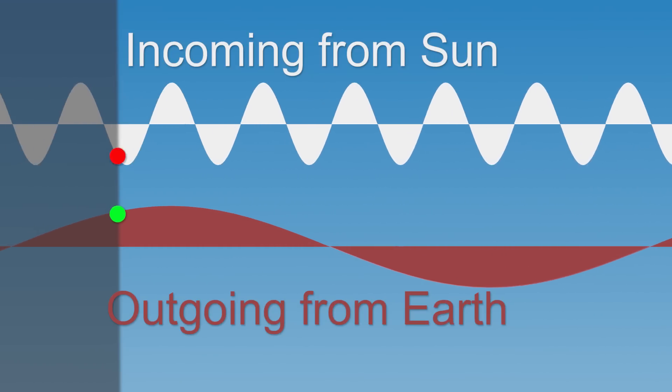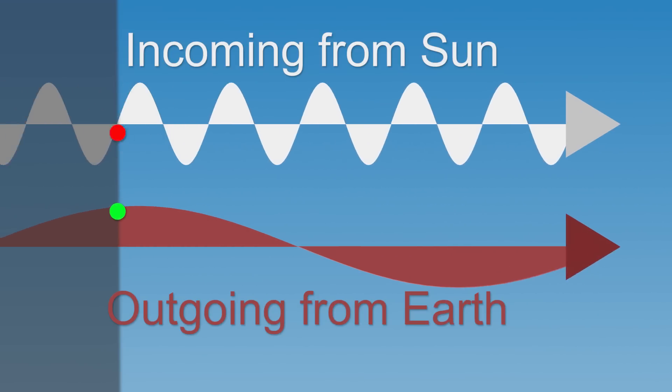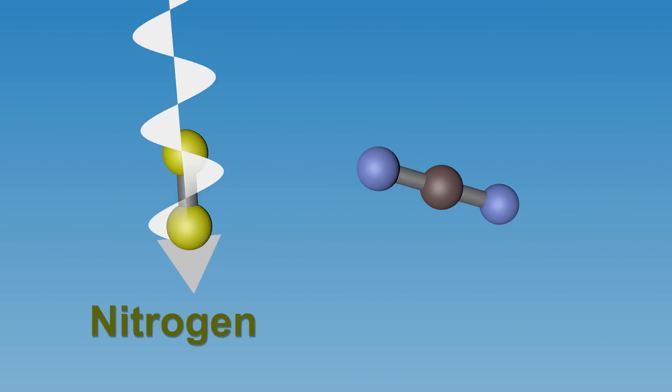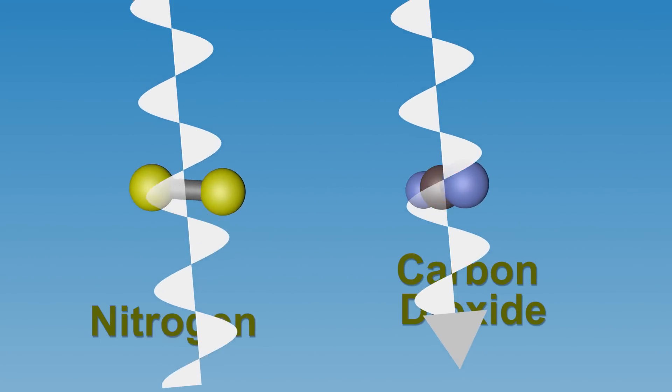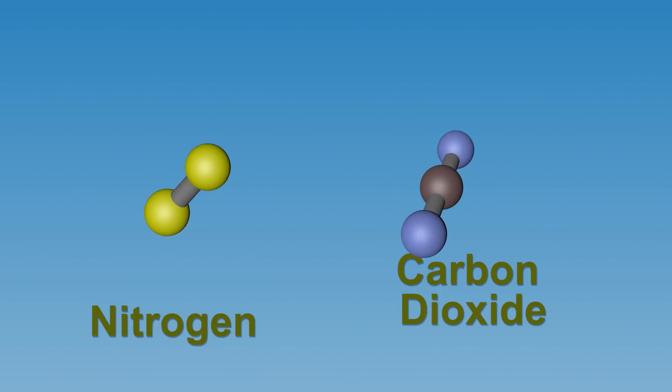One: incoming radiation which is oscillating at a higher rate, and neither nitrogen nor carbon dioxide absorbs it. Second: outgoing radiation from Earth at around one-tenth the rate, and now suddenly carbon dioxide can absorb it, but nitrogen still cannot absorb it.